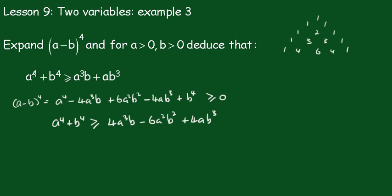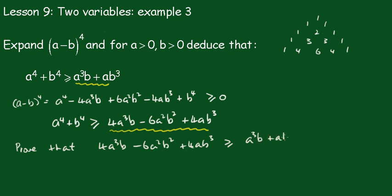This is a true statement. For this to be true, we must show that this part here is greater than this part. So we have to prove that 4a^3*b - 6a^2*b^2 + 4ab^3 is greater than or equal to a^3*b + ab^3.